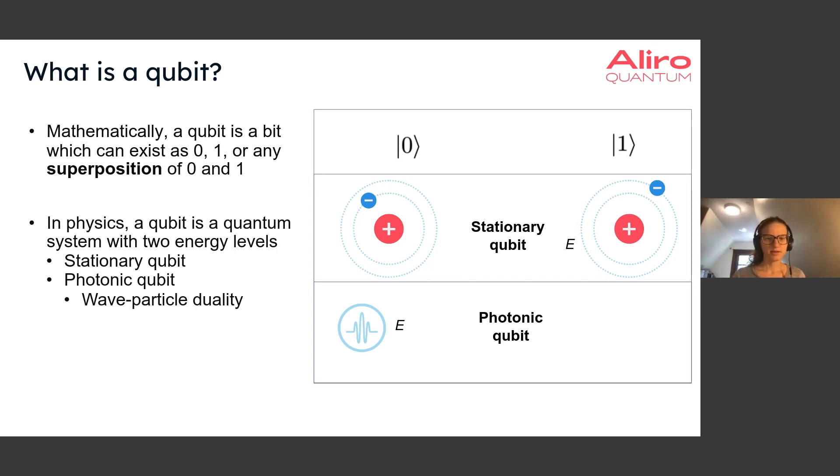In physics, a qubit is a system that has two energy levels that's small enough and isolated enough so that it can exist in either of these two energy levels, but also in any superposition of the two energy levels.